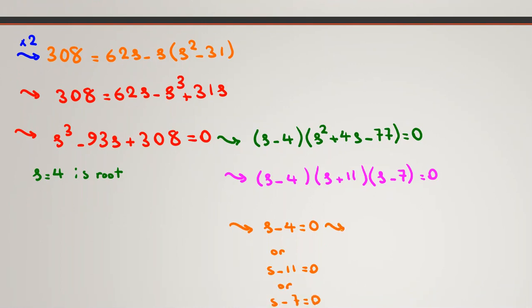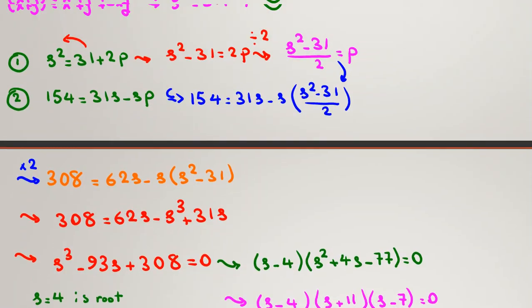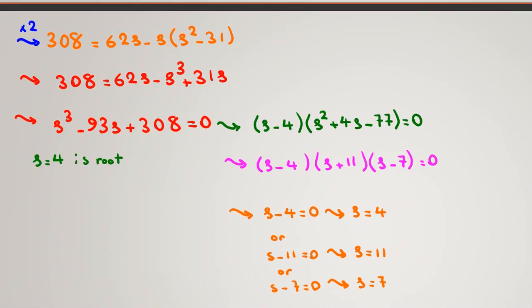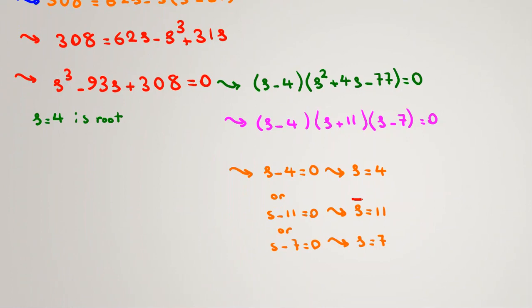From first part, S equal to 4. From second part, S equal to 11. And from third part, S equal to 7. But the problem says what? Find maximum X plus Y, which is maximum S. So maximum S is what? S equal to 11. And so it is our answer.